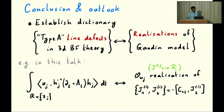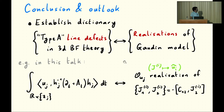In conclusion, I explained how by introducing certain line defects in 3D BF theory you can reproduce the Gaudin model in the realization where the abstract generators are realized in terms of points on the coadjoint orbit over U_j. It would be interesting to understand if there are other types of defects you could add to 3D BF theory to produce other realizations of the Gaudin model, and in particular to understand what is the correspondence between choices of line defects in BF theory and realizations of the Lie algebra G at each site in the Gaudin model — a similar question one can ask in 4D Chern-Simons theory about surface defects and realizations of the affine Gaudin model.